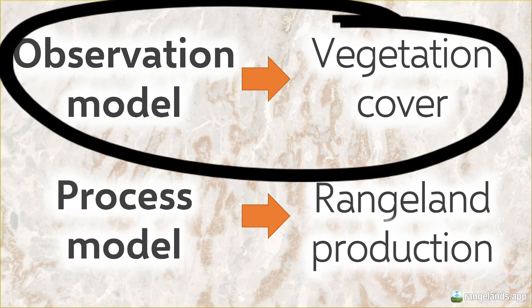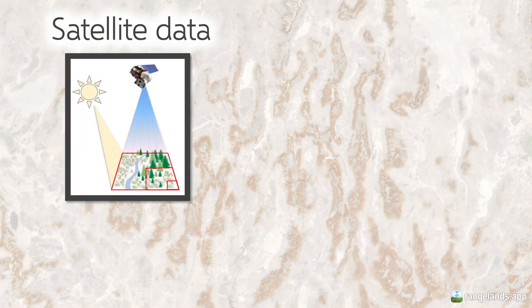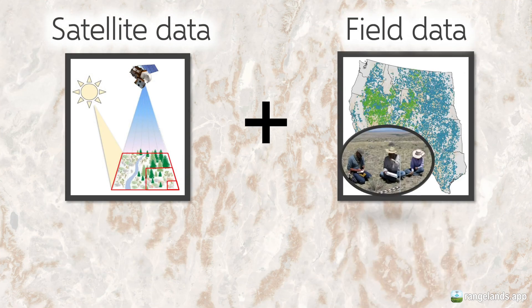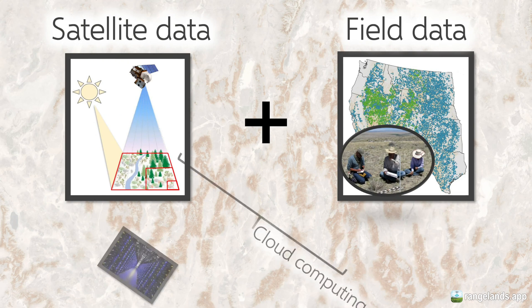For this observation-based model, you may be asking: what types of observations are we talking about? We're talking about two types of observations — first is satellite data, and the second is field vegetation data — and these are both tied together by cloud computing.